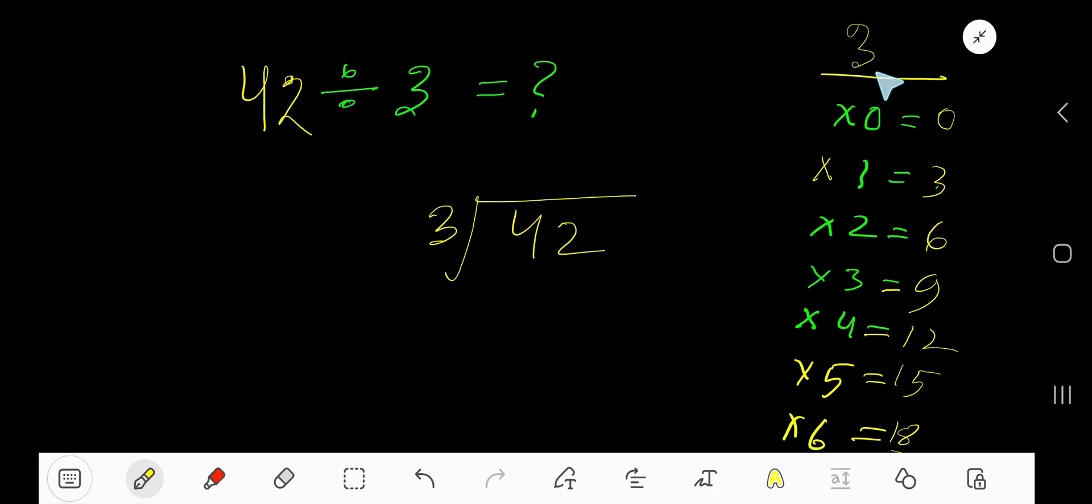To find out the multiplication table of 3 easily, just add 3 with the previous step. 0 plus 3 is 3, 3 plus 3 is 6, 6 plus 3 is 9, 9 plus 3 is 12, 12 plus 3 is 15. 3 goes into this current dividend 4 how many times?